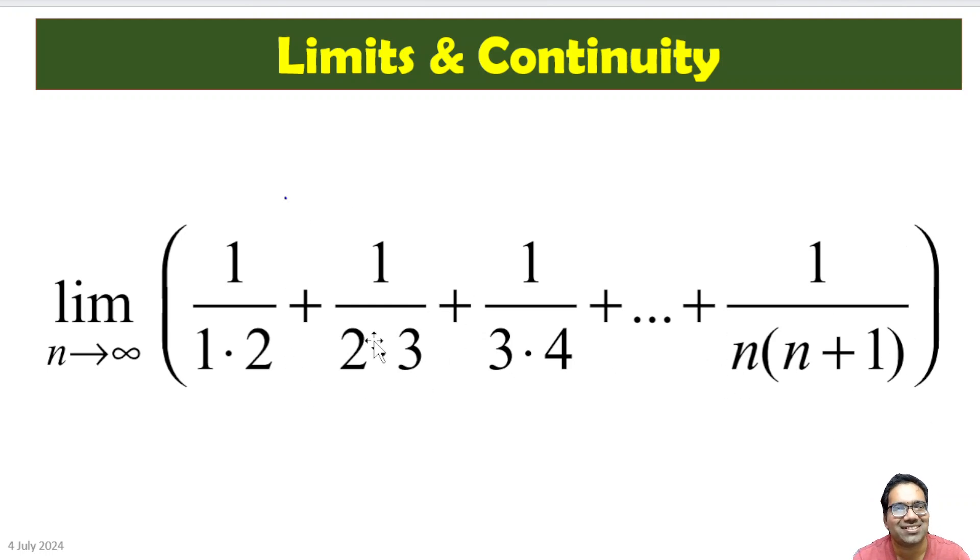Now, here itself there is a hint. We have 2, 3, 3, 4, 4, 5, etc. And 3 minus 2 is 1, 4 minus 3 is 1, 5 minus 4 is 1, and n+1 minus n equals 1.